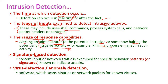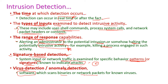Signature-based detection examines input or network traffic for a specific pattern or signature known to indicate an attack. This is a very powerful intrusion detection system that monitors the behavior pattern or signature of intrusive activity. Virus detection, otherwise called anomaly detection, uses antivirus software which scans binaries or network packets for known viruses — known viruses can be easily detected, but unknown ones are very difficult.